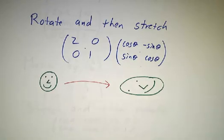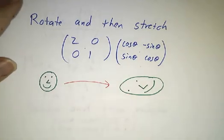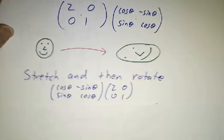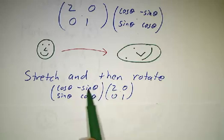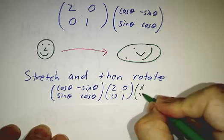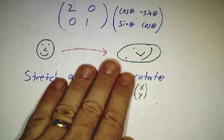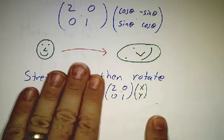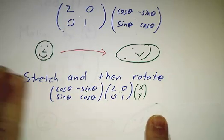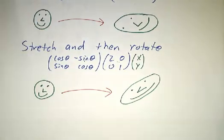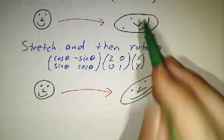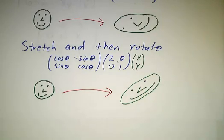Now, order matters. If you stretched and then rotated, that would be a different operation. To stretch and then rotate, you would first stretch and then you'd rotate. Why is this the first guy? Because you're applying this to the vector. This is the original position. This is the stretched position. This is the stretched and rotated position. If you stretch and then rotate, it's not the same thing as rotating and then stretching. Okay, so order matters.